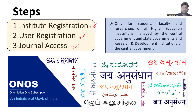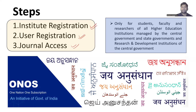This ONOS scheme covers most of the high-ranking and very high impact factor research papers and journals which the research community will be able to access.